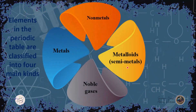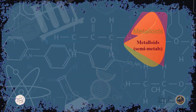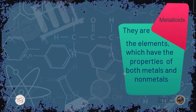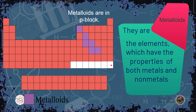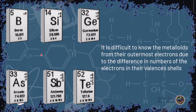Metalloids, or semi-metals, have both metallic and non-metallic properties. They exist along the dividing line in the periodic table. Examples include boron, silicon, germanium, arsenic, antimony, and tellurium. It is difficult to identify metalloids solely from their outermost electrons because each one has a different number of electrons in its valence shell.